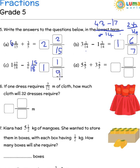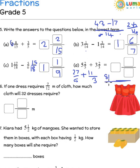So it becomes 1 and 1 by 9. The next one: 5 fives are 25 plus 2 is 27, divided by 5. So it is 27 by 5 plus 11 by 3, because 3 threes are 9 plus 2 makes 11 by 3. Between 5 and 3 the LCM is 15. So 5 multiplied by 3 gives 15, and 27 multiplied by 3 makes 81. Then 3 multiplied by 5 is 15, so 11 into 5 makes 55. So 81 plus 55 makes 136 by 15, which is 9 and 1 by 15. That is the answer.